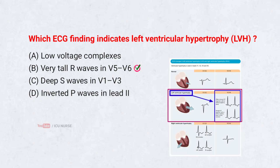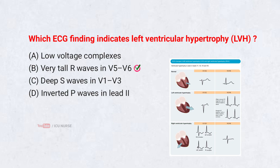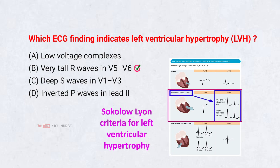LVH increases electrical activity in the left ventricle, producing tall R-waves in lateral leads such as V5 and V6. Criteria like the Sokolov-Leon Index use these wave heights to diagnose hypertrophy.